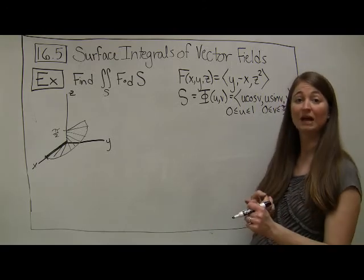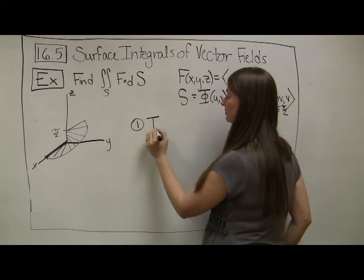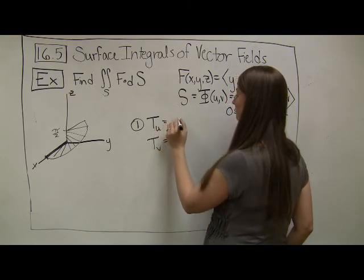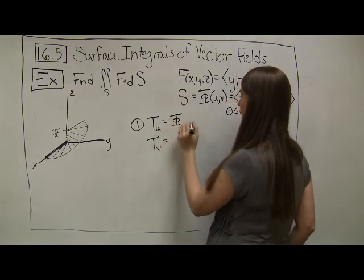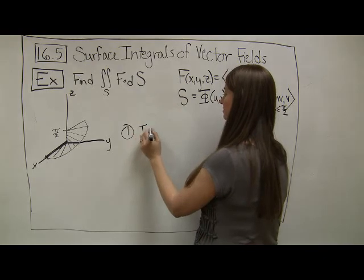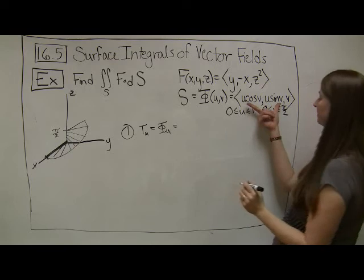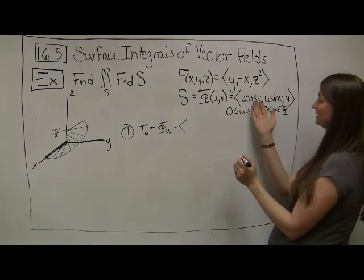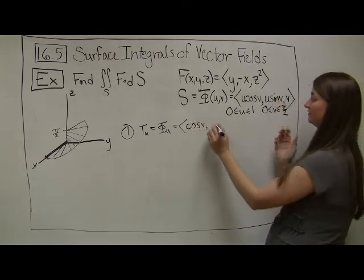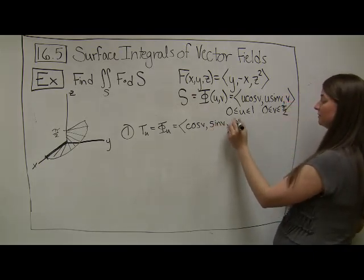What are our steps? We have to come up with a normal vector. The first thing I'm going to do is compute my T sub u and my T sub v, which are my partial derivatives of my φ function. φ sub u, I'm going to move down a little bit. T sub u equals φ sub u, which in this case, my partial derivative with respect to u, I'm treating v as a constant, so cosine of v becomes my coefficient, and then sine of v also becomes my coefficient, and the derivative of v with respect to u is just 0.